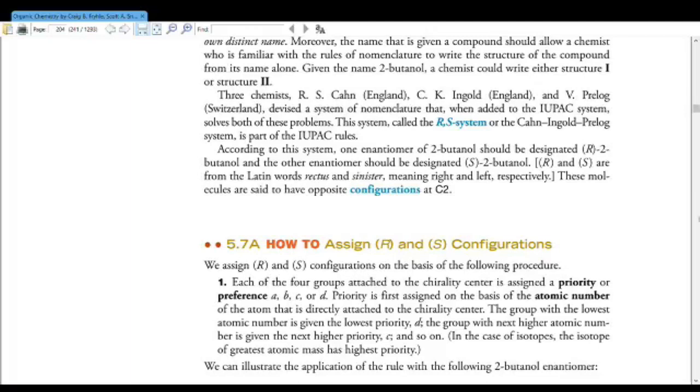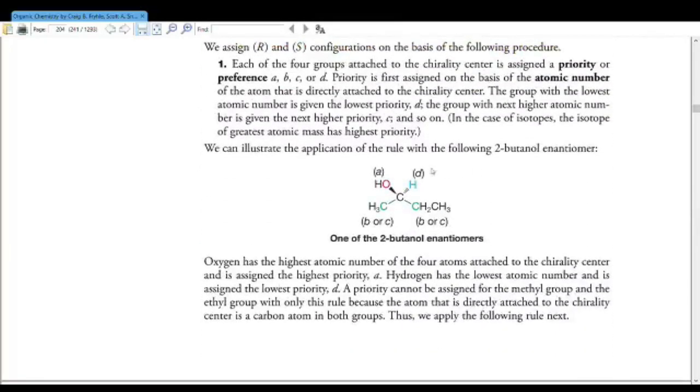Alright everybody, get out your notepads because you are going to need to remember this system and how to do this for pretty much the rest of the course. Also, the Cahn-Ingold-Prelog system of assigning priorities is used in other things in organic chemistry. This is how you figure out if a compound is R or S. The first thing we want to do is assign each of the groups bonded to our chiral carbon a priority. This priority is decided based on atomic number. The higher the atomic number, the higher the priority.